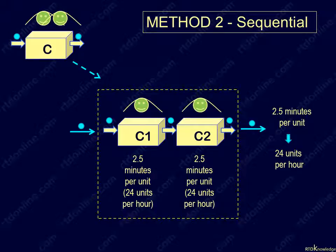It will output one unit every 2.5 minutes, and therefore, have a capacity of 24 units per hour, as in method 1. So whether you use method 1 or 2, the new cycle time and capacity will be the same.